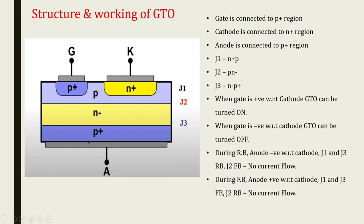This is the basic structure of GTO. You can see a P+ region, then an N- region, then a P region, and then an N+ region. The gate is connected to the P+ layer — P+ means a highly doped P region. The anode is also connected to a highly doped P+ region. There is a lightly doped N- region, a moderately doped P region, and the cathode is connected to a highly doped N+ region.